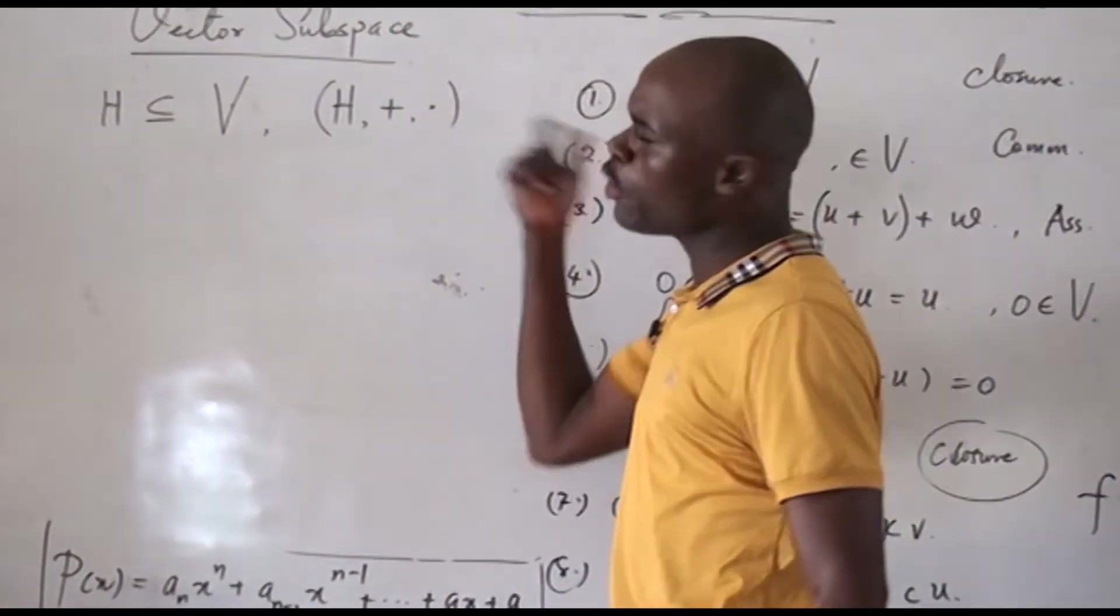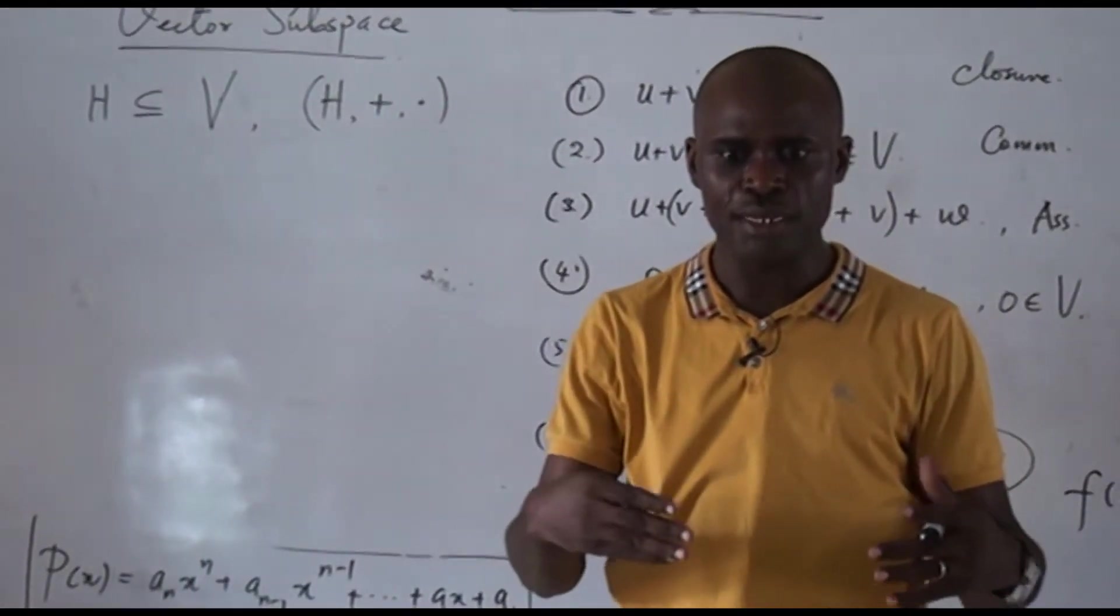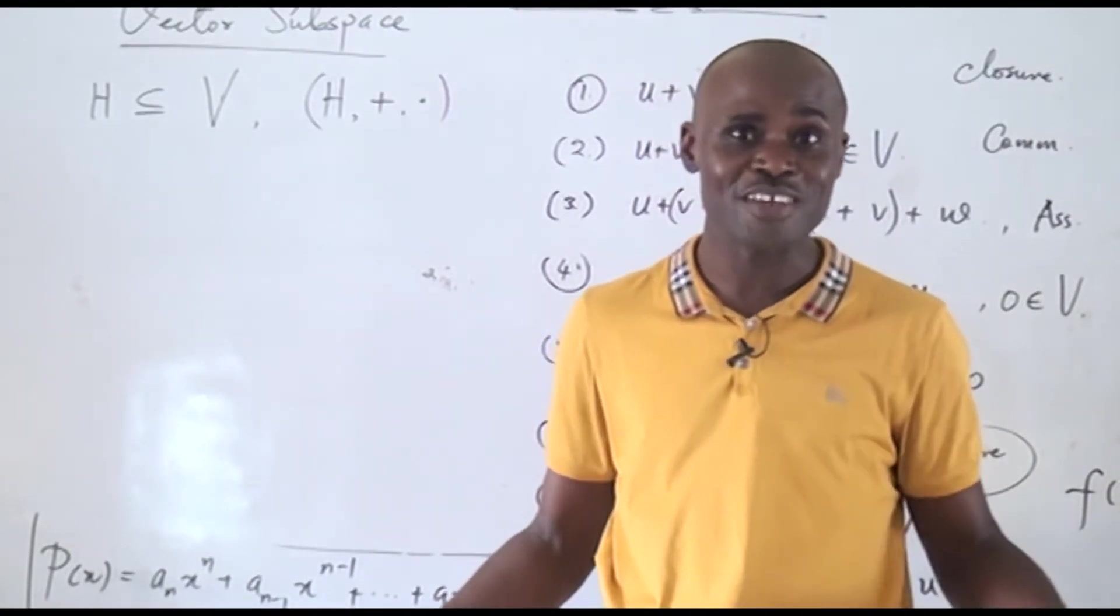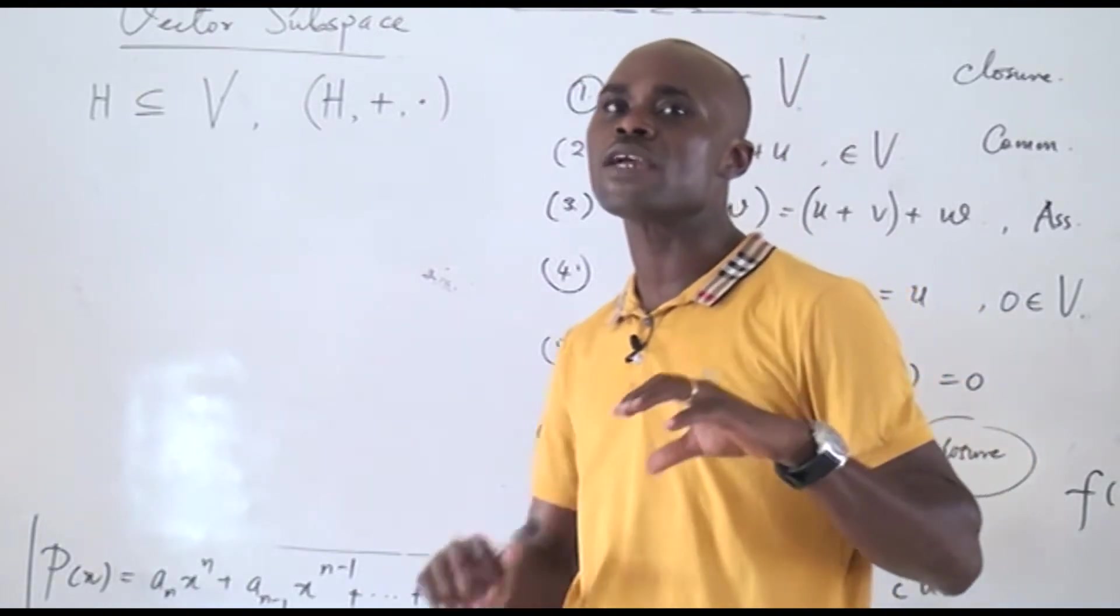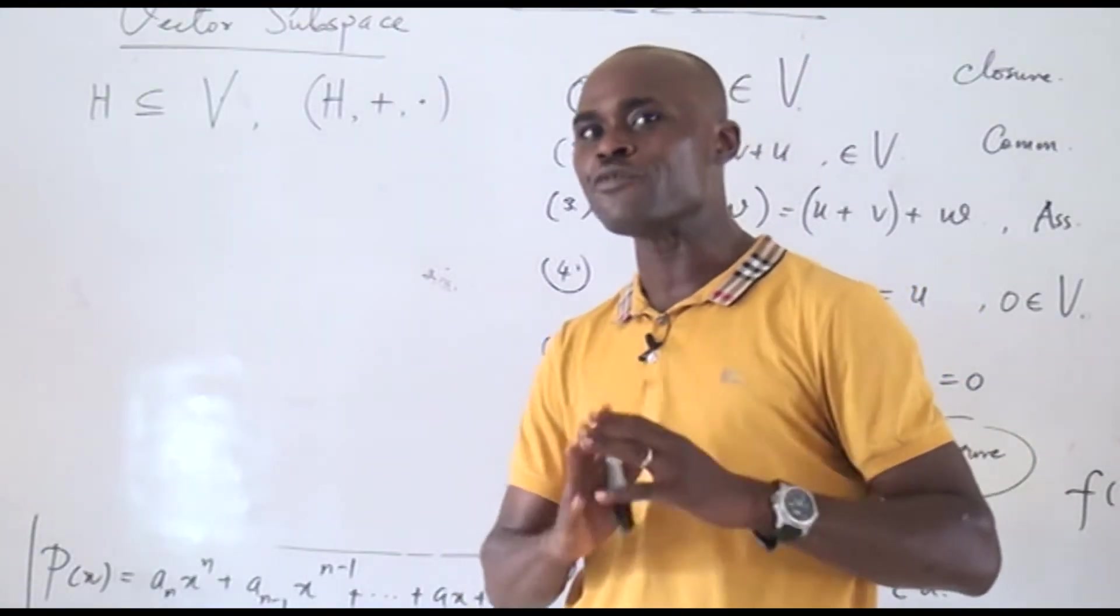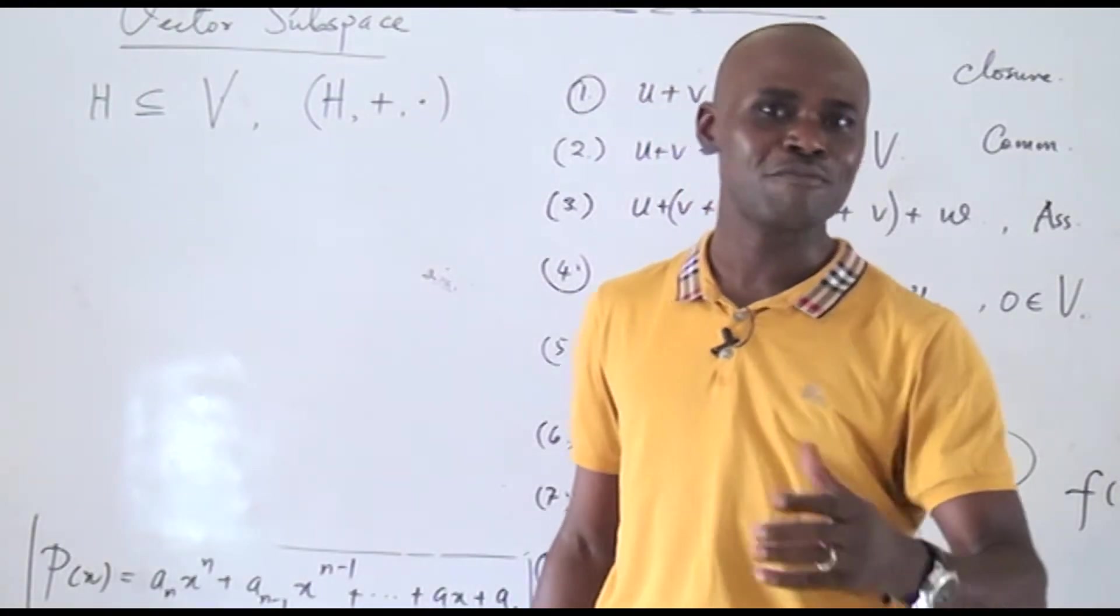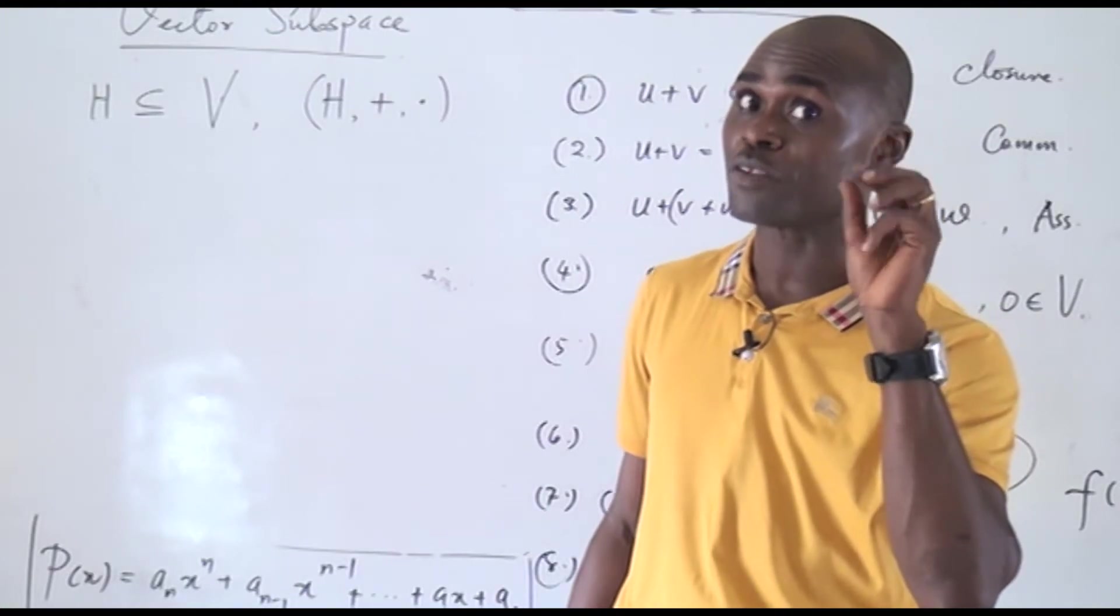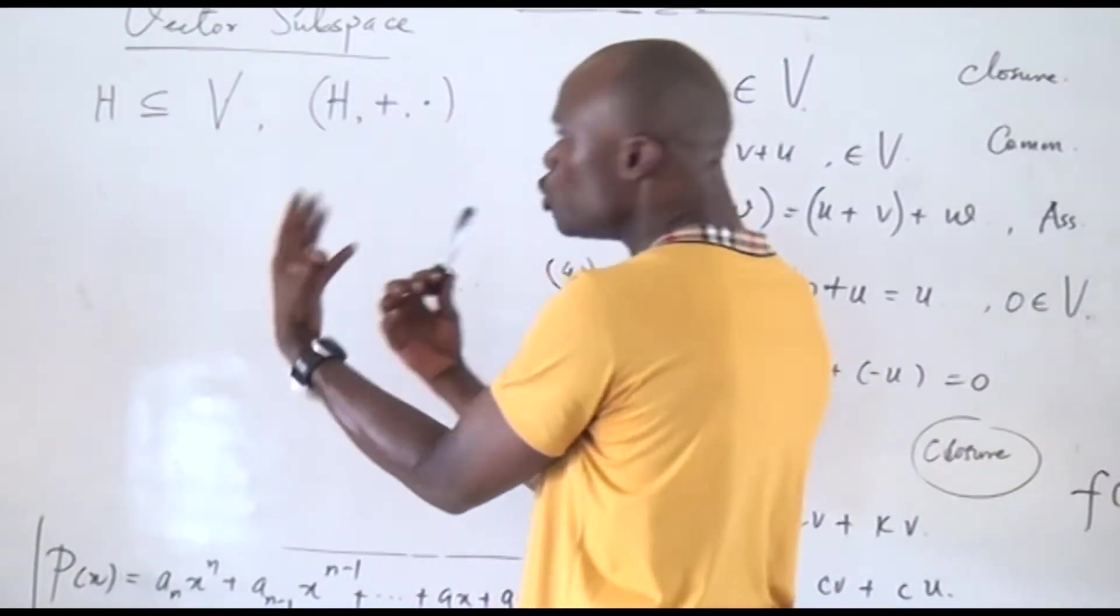So, how do we know that? Because the truth is that once you can show that this is a vector subspace, then it is a vector space. Very interesting. So, all you need to do is just need a few properties to show that a particular space is a vector subspace. If you can prove that it is a vector subspace, then it is actually a vector space. Very, very interesting. And here, you need just three properties, but I'm going to reduce it to two properties.